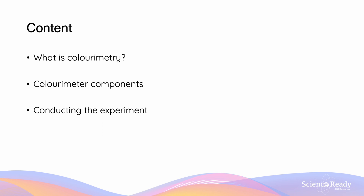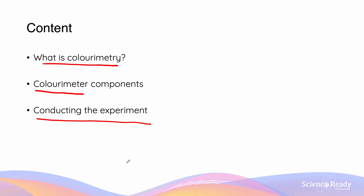Hi everyone. In this video we're going to go through how we can use colorimetry in order to experimentally calculate the Keq value of an equilibrium system. We'll first begin by looking at what colorimetry is, then we'll look at the components of the colorimeter, and finally we'll look at how we can conduct the experiment.